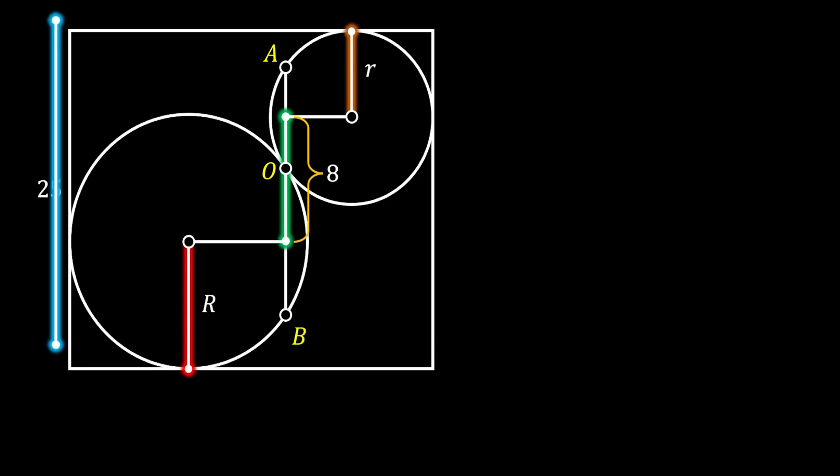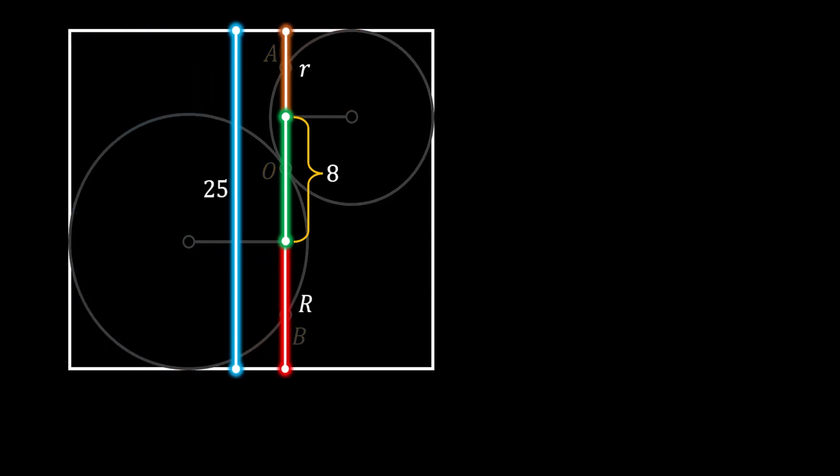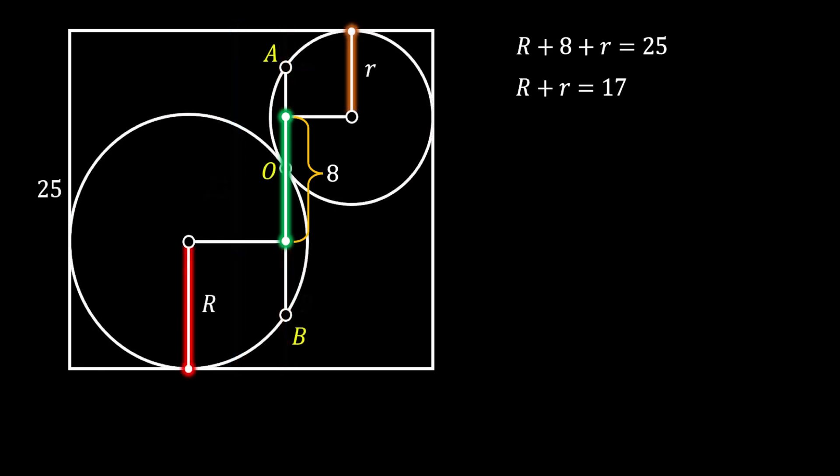Then, let's also notice the height of our rectangle. Now, if we clear our image a little bit and rearrange the position of those lines, you can see that the sum of capital R, 8 and small r is equal to 25. So, this means that the sum of radii of our two circles is equal to 17.